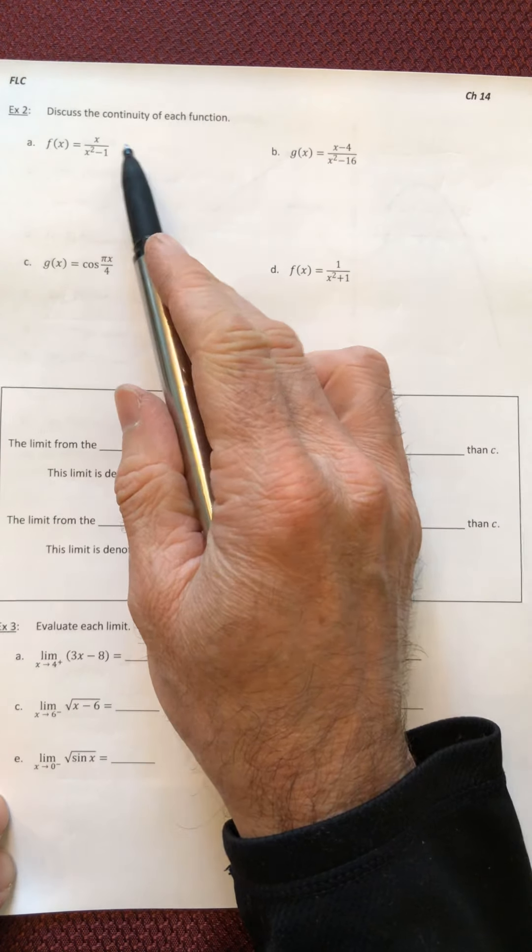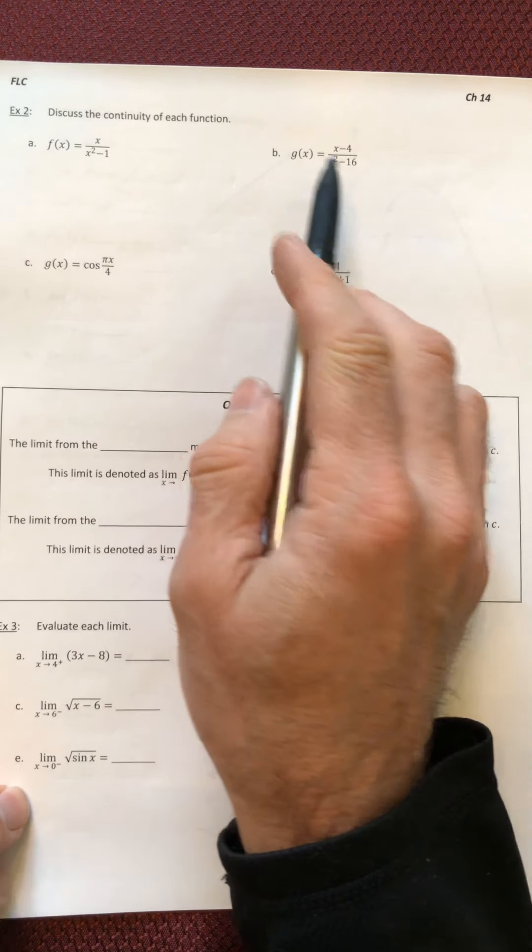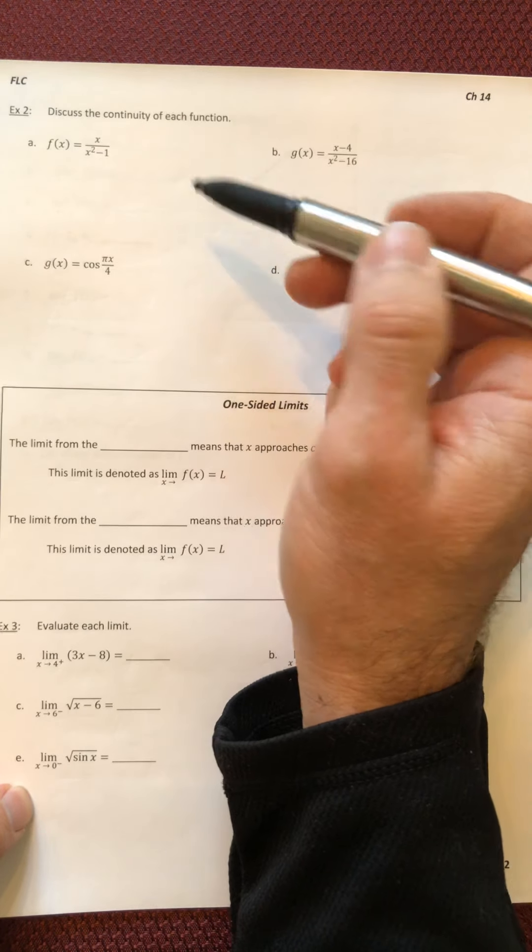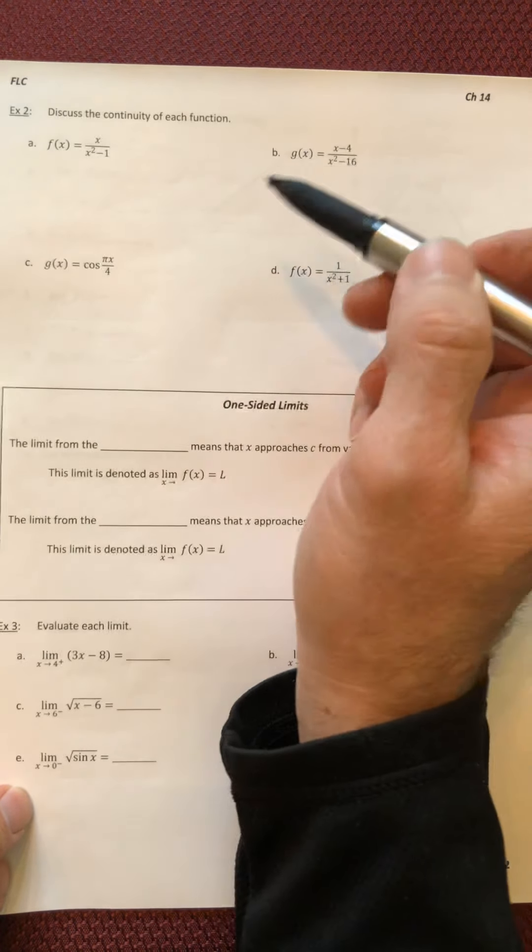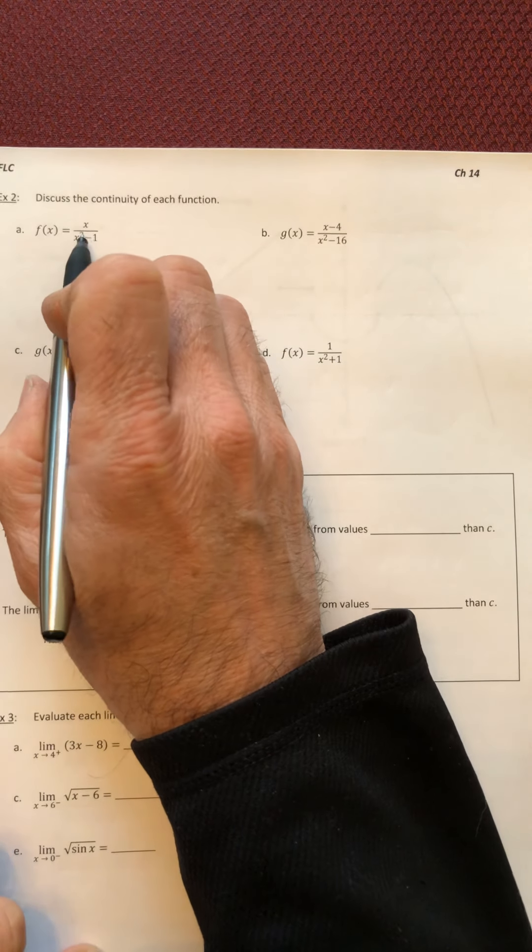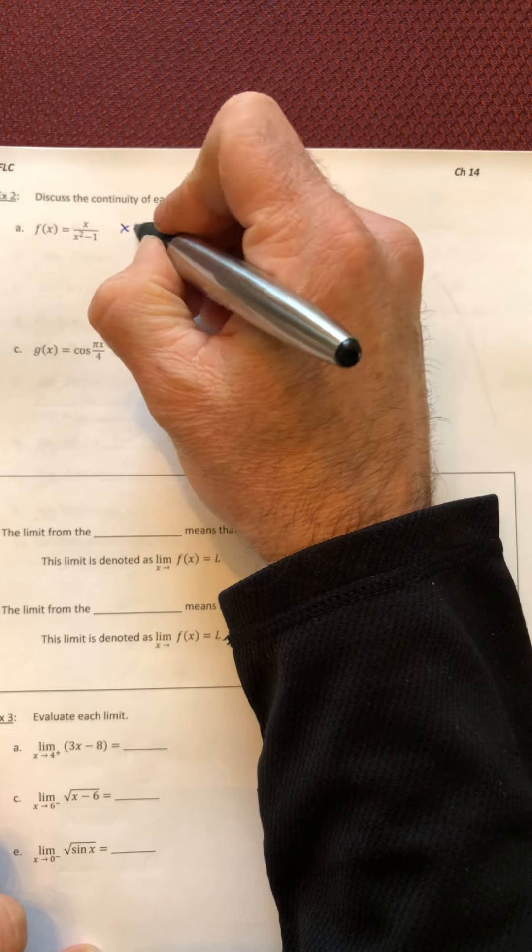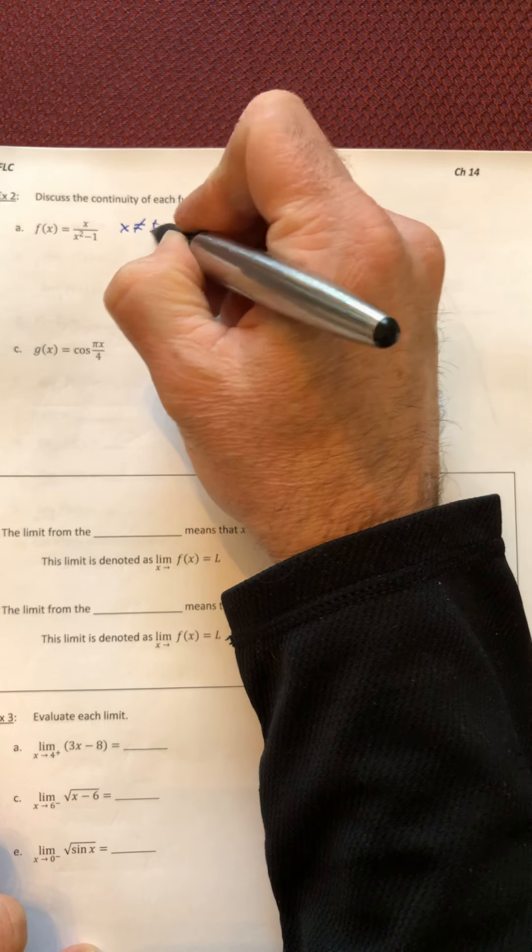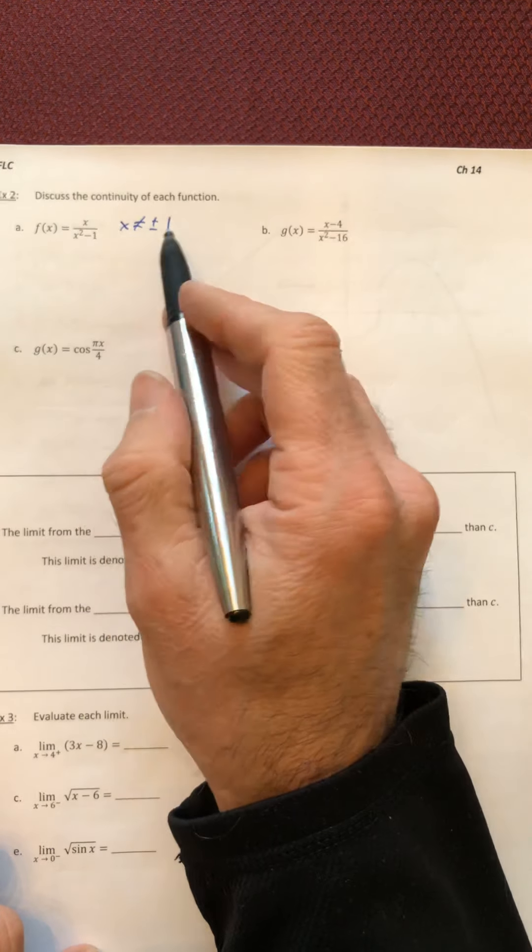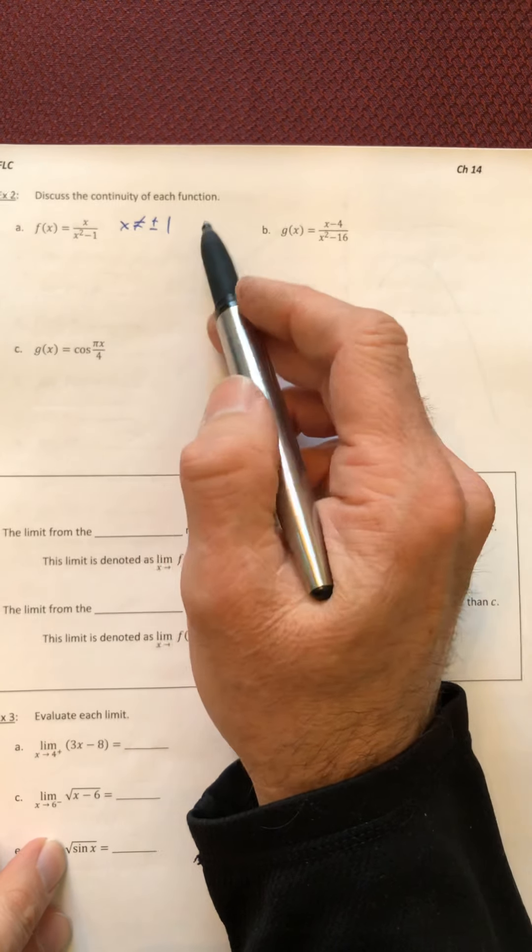Alright, so this is our second video in 14.3. Let's discuss the continuity of each function. We got to say where it's continuous and where it's not, and then if it's not, we got to classify it as removable or non-removable. So what numbers would you not be allowed to plug in for x in that function? Well, you can't use plus or minus one, and there's nothing you can do. You can't really factor this to get things to cancel out. So that'll tell you what kind of classification it is.